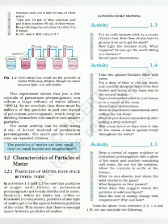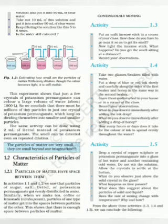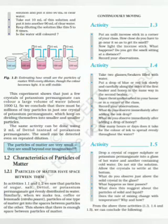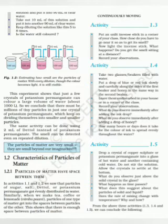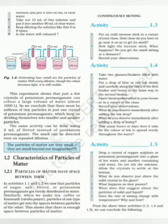Let us move to the next property — the characteristics of particles of matter. The first characteristic is that particles of matter have space between them. Activities 1.1 and 1.2 showed that particles of sugar, salt, Dettol, or potassium permanganate get evenly distributed in water. Similarly, when we make tea, coffee, or lemonade, particles of one type of matter get into the space between the particles of water. This shows that there is enough space between particles of matter.